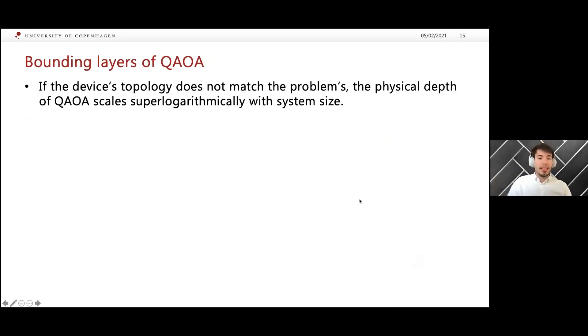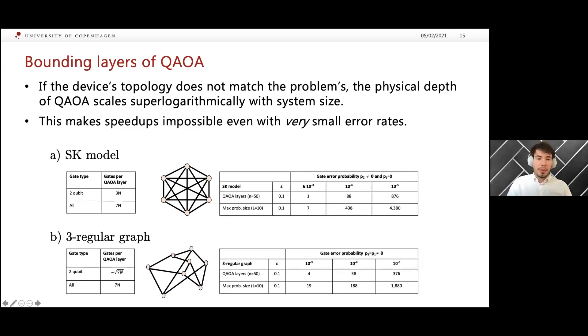For instance, you can show that if the device's topology does not match the problems, then current proposals like QAOA will require depth that scales super-logarithmically with system size to be implemented, and then you really require very small error rates to be able to get a quantum speedup. In the paper, we do some back-of-the-envelope computations given the scalings of the depth of the circuits in recent experiments by Google to solve, say, the XY model or the three-regular graph on a noisy quantum computer. We see that even with very low noise rates like 10 to the minus 5, it will be difficult to implement a significant number of QAOA layers before losing advantage, because for these proposals the depth scales with the number of qubits linearly essentially.